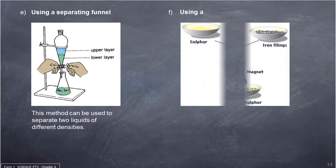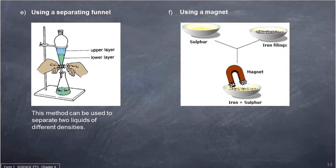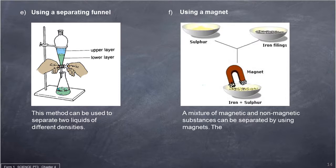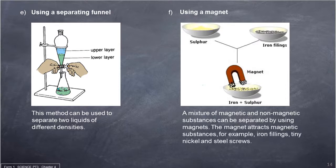Using a magnet: a mixture of magnetic and non-magnetic substances can be separated by using magnets. The magnet attracts magnetic substances, for example iron filings, tiny nickel and steel screws.